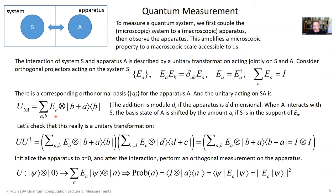I've expanded it in terms of the orthogonal projectors acting on the system — those are the measurement outcomes on the system that I want to consider. And for each measurement outcome on the system, an orthogonal projector operator. On the apparatus, there's what I'll call a shift operator. This is summed over b, so for each basis state for the apparatus, what this operator does is shift the basis state by the amount a which labels this projector. You should think of this as addition modulo d.